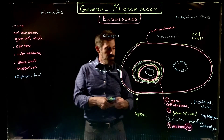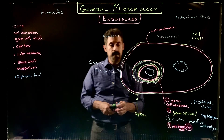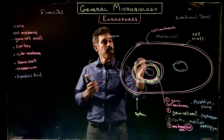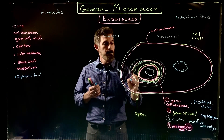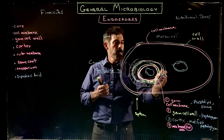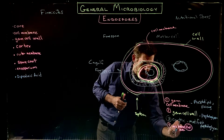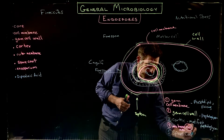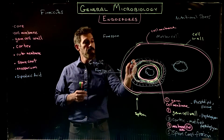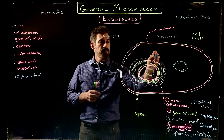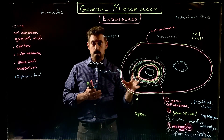Outside the outer membrane, a new layer is going to be called the spore coat — layer five. The spore coat is protein, produced by the mother cell, making a tough outer protein shell around the spore that protects it.